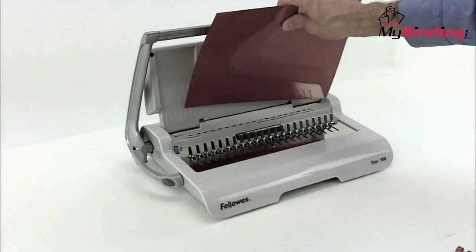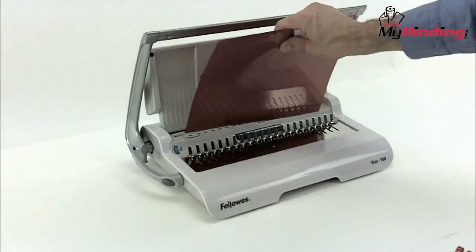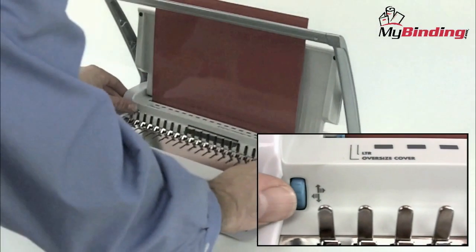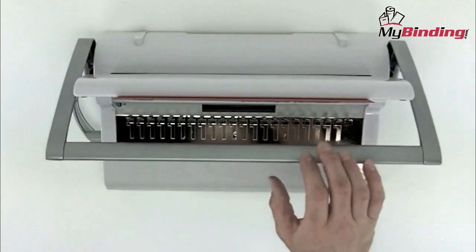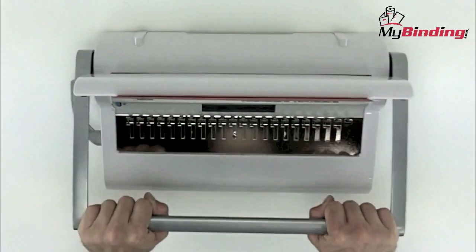Let's begin with the covers. You slide them into the slot in the back of the machine. Use the side margin control knob on the left-hand side to be sure to align your paper where you want the holes punched, and all papers will be punched consistently throughout your project.